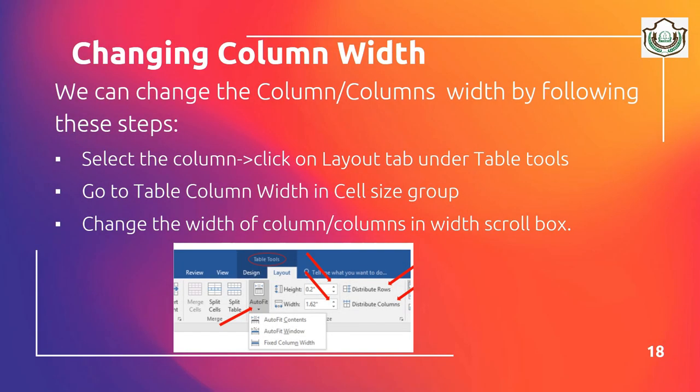You can also change the column width. Select the column, click on the Layout tab, then go to the Table Column Width in the Cell Size group, and change the width of the column using the width scroll box.